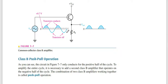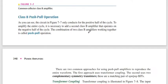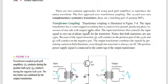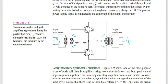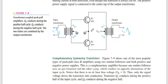When the transistor is in the cutoff region, we use two transistors connected oppositely. Both emitters are grounded, and the collectors are connected to each other.